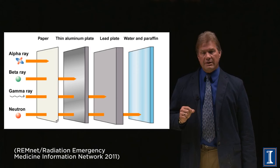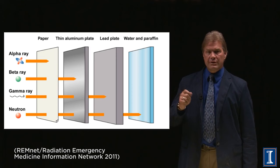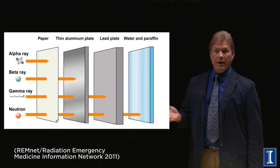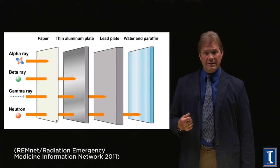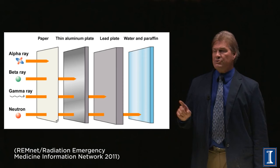Alpha rays, a helium nucleus, is the shortest penetration. A beta can go through paper, it won't go through a thin aluminum plate. It's an electron. A gamma ray is just a high-energy photon, and you need something pretty substantial, like lead, to stop it. Now, on this same chart, you see neutrons.